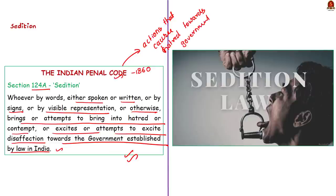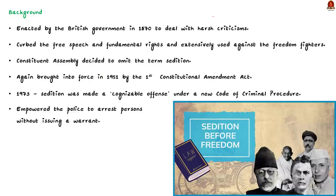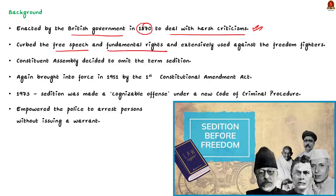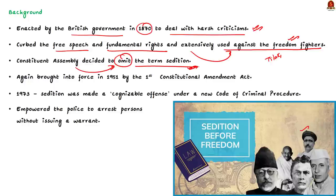Now let us see the evolution of sedition law. The law of sedition was enacted by the British government in 1870 and added to the Indian Penal Code, mainly to deal with harsh criticism against the colonial government. It basically curbed free speech and fundamental rights in pre-independent India. The colonial government used this law to extensively curb the fundamental rights of freedom fighters like Bal Gangadhar Tilak, Mahatma Gandhi, Jawaharlal Nehru, and Bhagat Singh. After India achieved independence in 1947, there were constitutional debates, and considerable time was spent debating the inclusion of sedition law into the constitution.